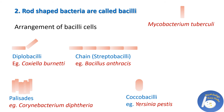Next is Coccobacilli. These rod-shaped bacteria are rounded at both ends, and this is called Coccobacilli. An example is Yersinia pestis, which is the causative agent of plague.